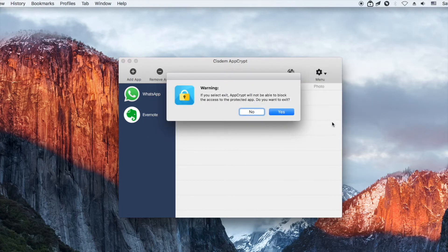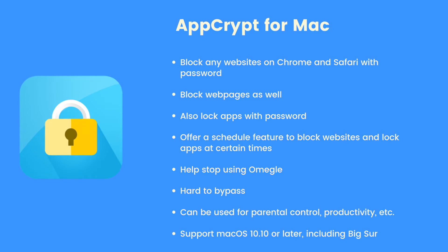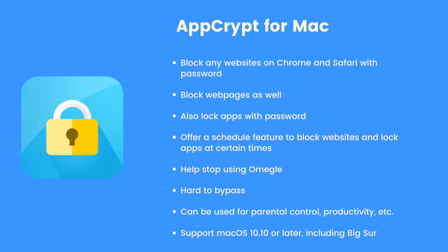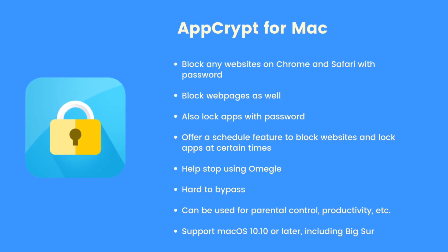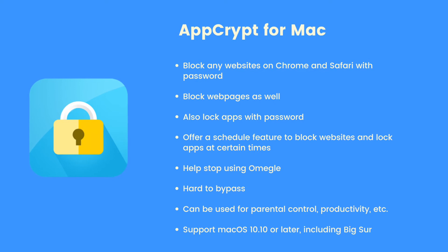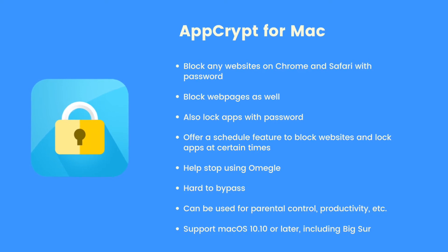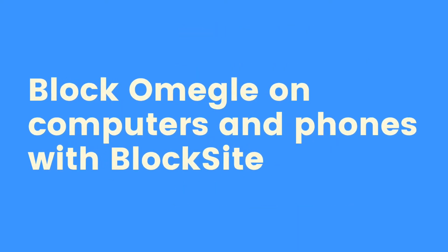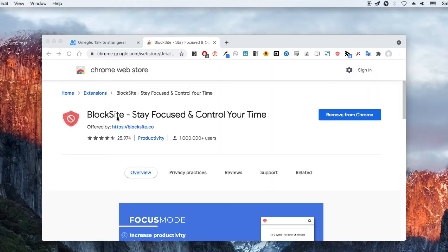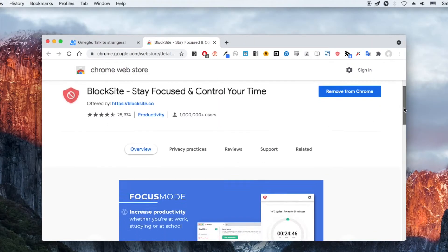System AppCrypt is a powerful tool to help you block any unwanted websites and webpages. You can find its official free download link in the description section below. The Block Site extension can also help you block Omegle. Install the extension on the web browser on your computer and use it to block omegle.com.